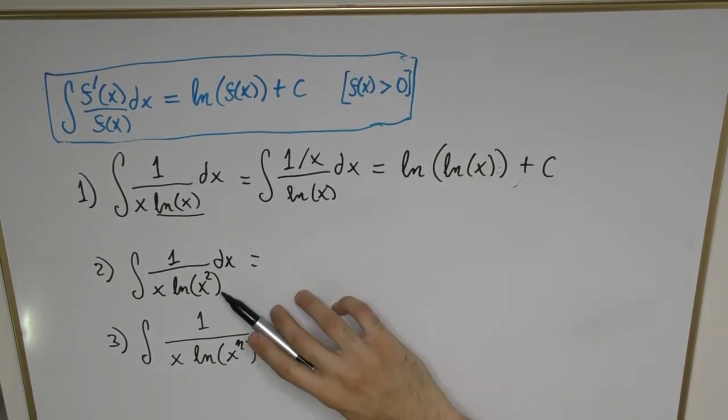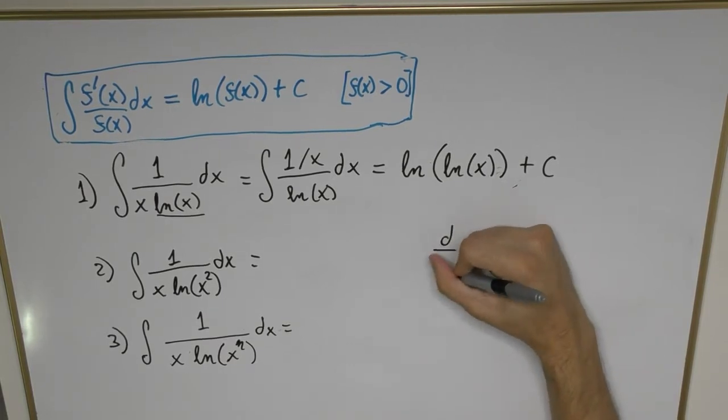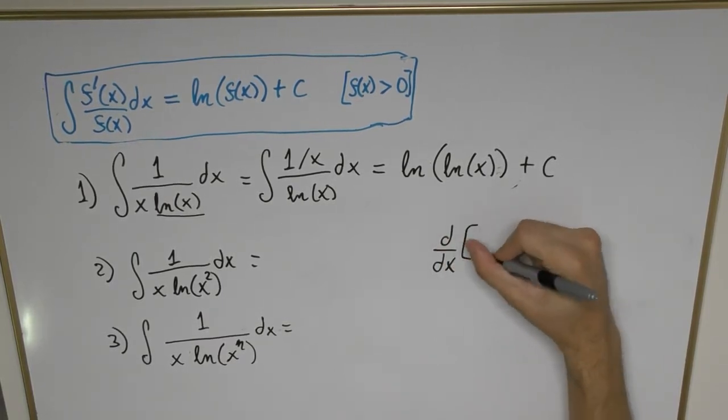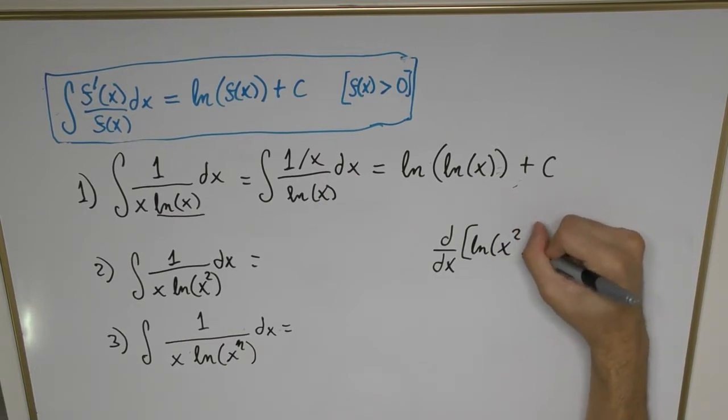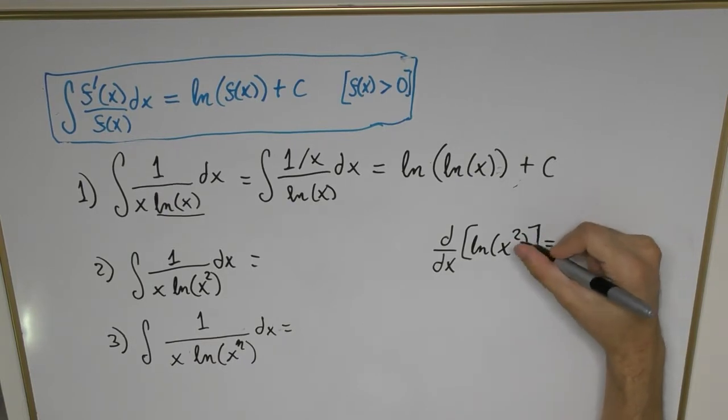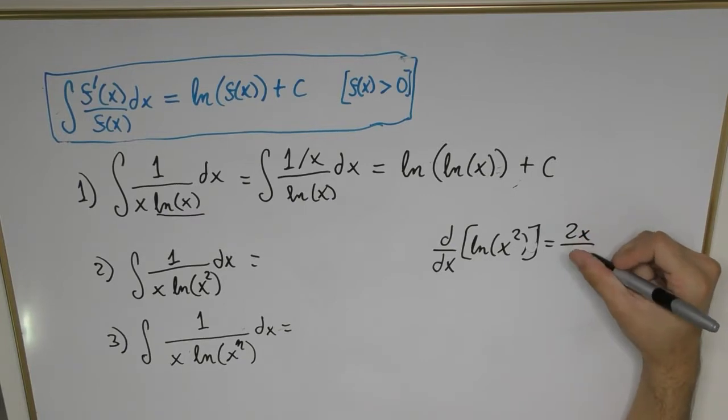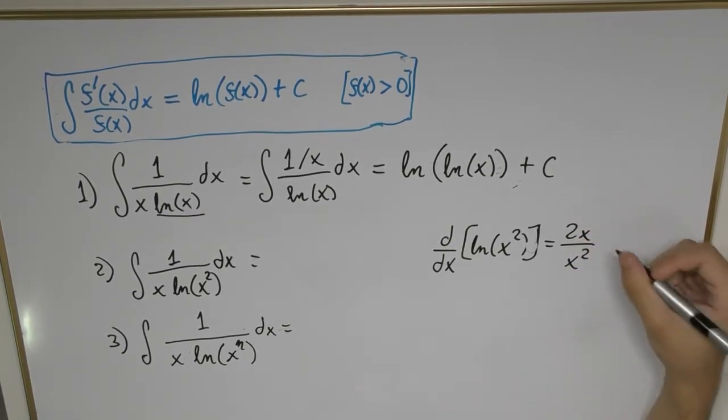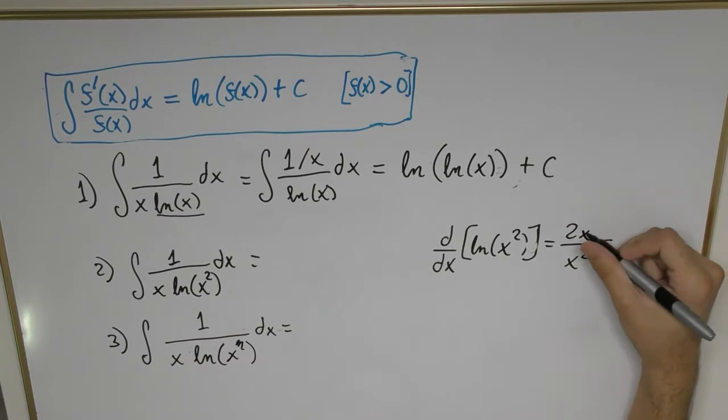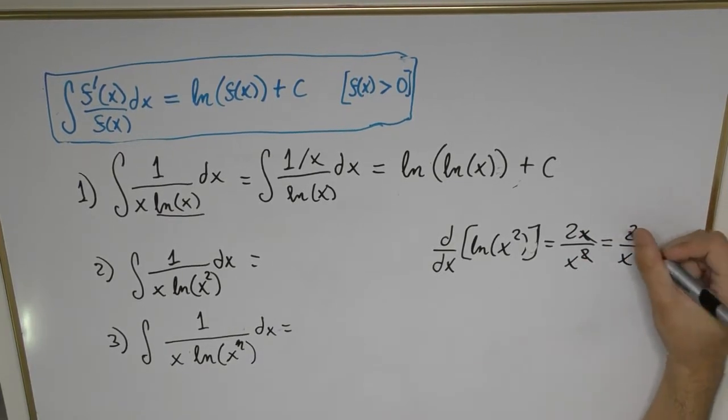Now what happens if we increase the power of that natural log inside the brackets to something like x squared? Well, we can apply the same logic. Let's try and differentiate ln(x²). We differentiate the argument, that becomes 2x, and we're going to divide that by the function itself, which is x². The next step is we cancel out one of these x's, so we're left with just 2/x, and that's the derivative.